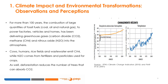For more than a hundred years, the combustion of large quantities of fossil fuels — coal, oil, and natural gas — to supply energy to factories, vehicles, and homes has been delivering greenhouse gases such as carbon dioxide (CO2), methane (CH4), and nitrous oxide (N2O) into the atmosphere. Cows, humans, rice fields, and wastewater emit CH4, while N2O is derived from fertilizers and pesticides used for crops. Deforestation reduces the number of trees able to absorb CO2.